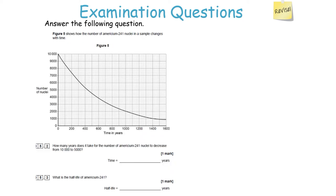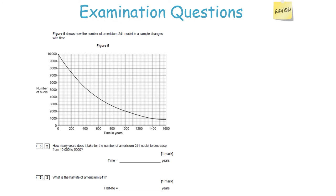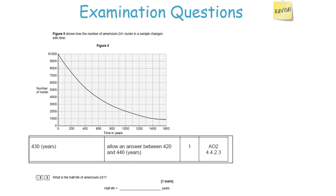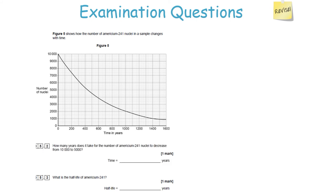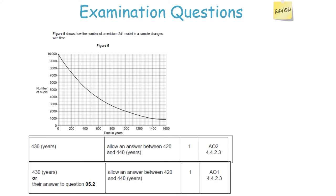Figure 5 shows the number of americium nuclei in a sample changing with time. How many years does it take for nuclei to decrease from 10,000 to 5,000, and what is the half-life? Use the graph: at 10,000 the time is 0, then go across to 5,000, read down the line, and the answer is 430 years. Going from 10,000 to 5,000 is halving the value, so the half-life is 430 years.